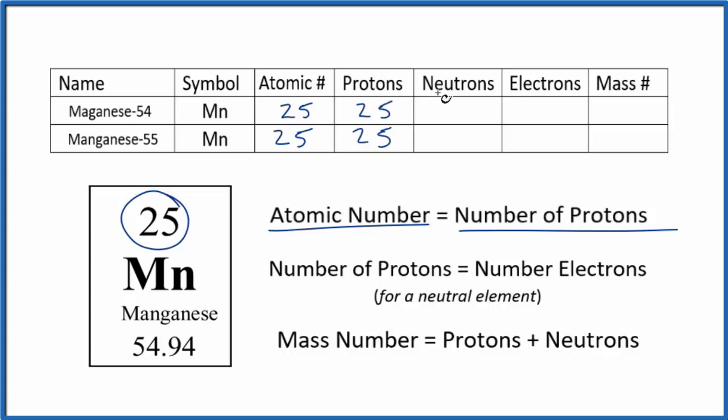Let's skip over the neutrons and look at electrons. For electrons, if we have a neutral element, and manganese is neutral here, it's just Mn, there's no negative or positive sign after it. For a neutral element, number of protons equals the number of electrons. So for both isotopes, 25 electrons.